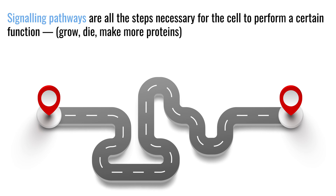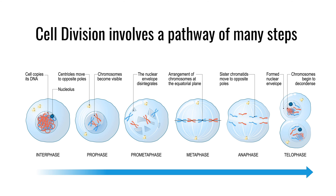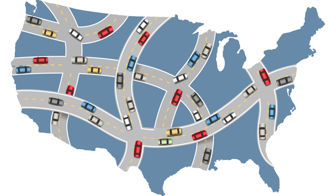One gene can't do that — it takes lots of products. Those products are all part of the pathway to reach the endpoint of producing a protein or a function like proliferation or division. For a cell to grow and divide, lots of things have to happen, including creating two daughter cells, and all of those things happen through a set of activated pathways.